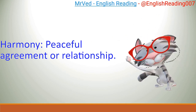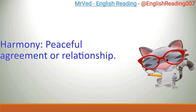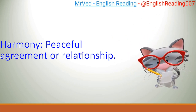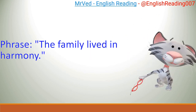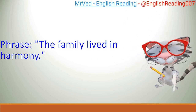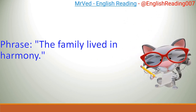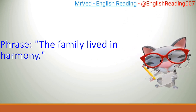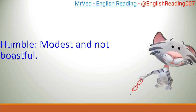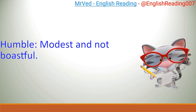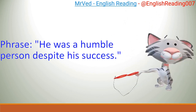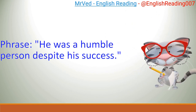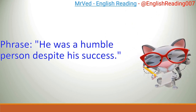Harmony: peaceful agreement or relationship. Example: The family lived in harmony. Humble: modest and not boastful. Example: He was a humble person despite his success.